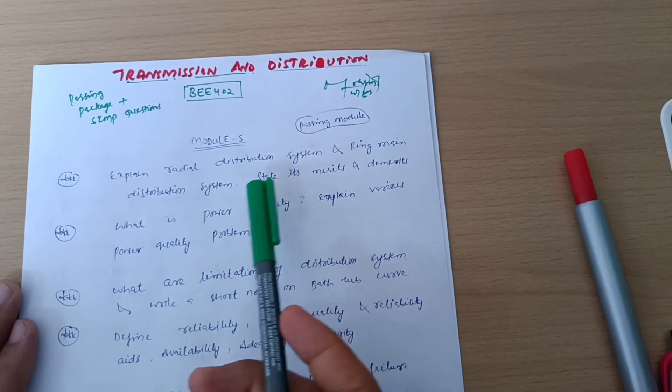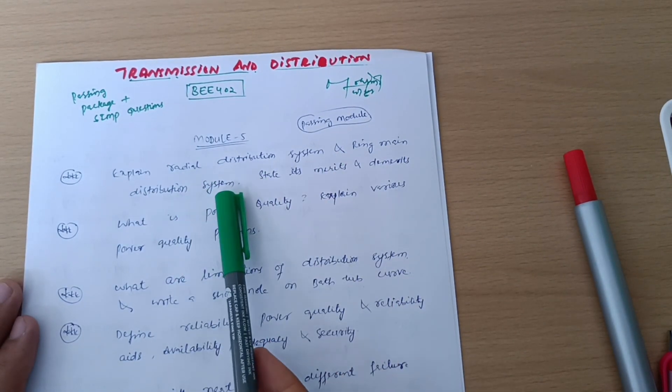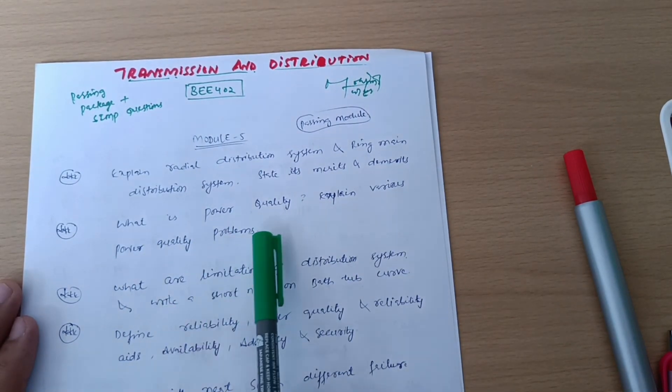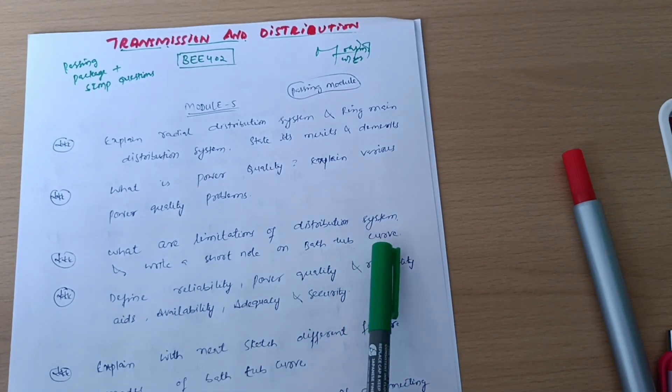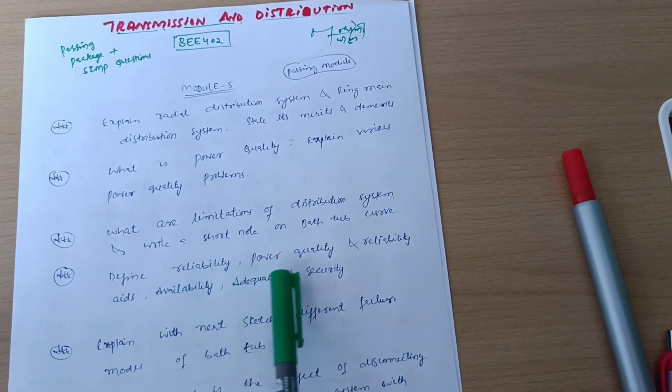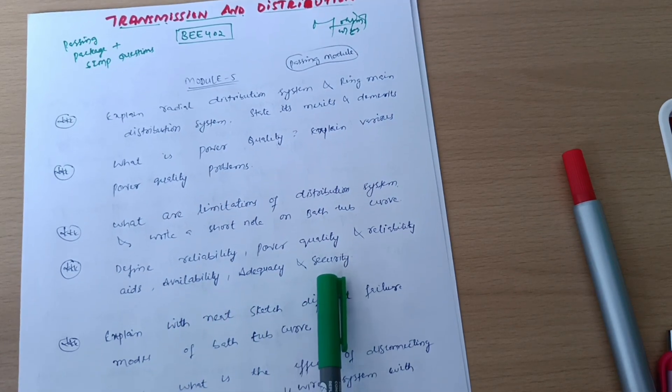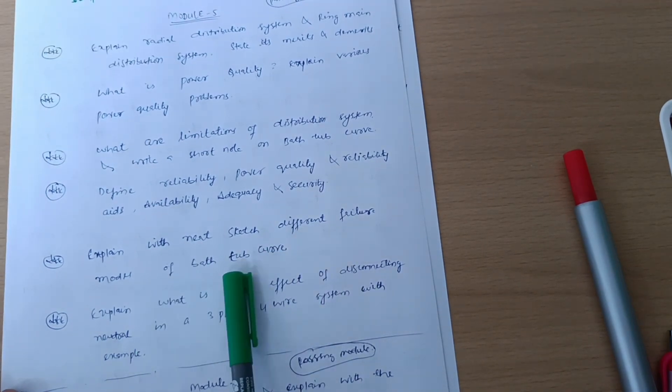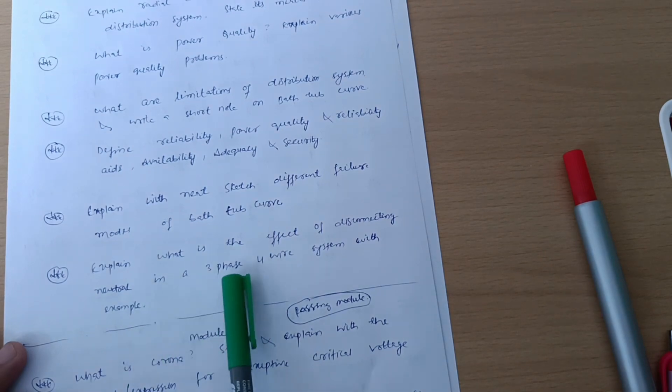You have to cover six questions from it: explain radial distribution system and ring main distribution system, state its merits and demerits. What is power quality? Explain various power quality problems. What are limitations of distribution system and write a short note on bathtub curve. Define reliability, power quality, and reliability aids: availability, adequacy, and security. Expand with neat sketch different failure modes of the bathtub curve. Explain what is the effect of disconnecting neutral in a three-phase four-wire system with example.